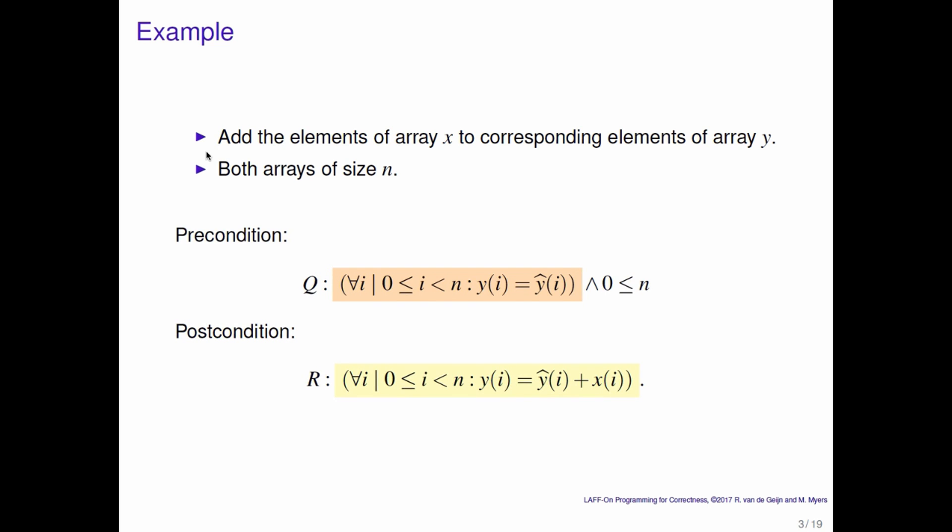What do we do? We specify the operation with the precondition and the postcondition. The precondition says that array y contains its original values, where y hat is this dummy variable or array that we introduced to be able to reason about the original contents. And then the postcondition says that the array y has been overwritten with the original contents plus the corresponding entries in array x.